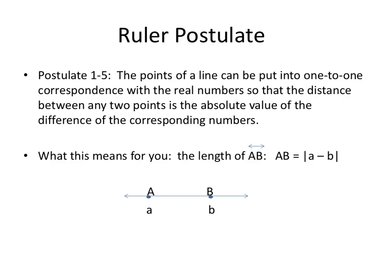So let's first talk about the ruler postulate. The ruler postulate says the points of a line can be put in one-to-one correspondence with the real numbers. Let's determine what that means. That means really that the points on a line are lined up with the real number line.